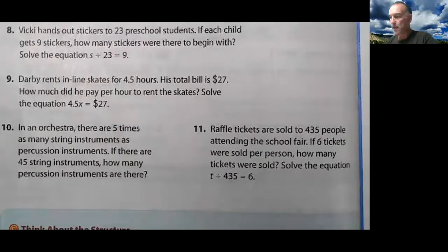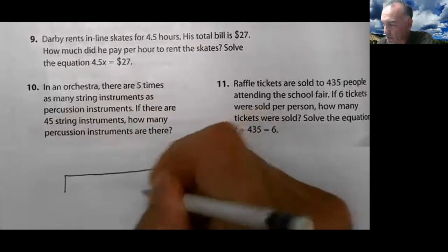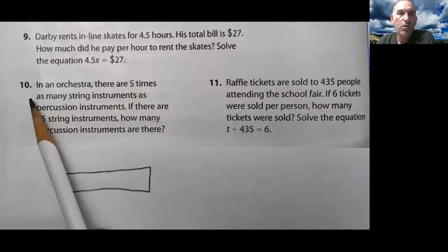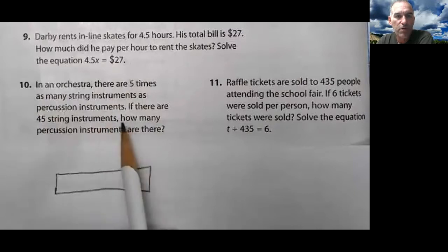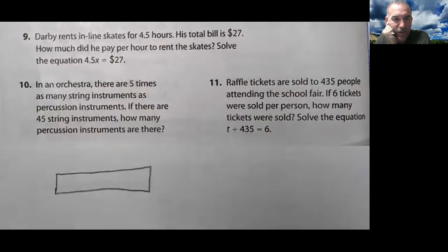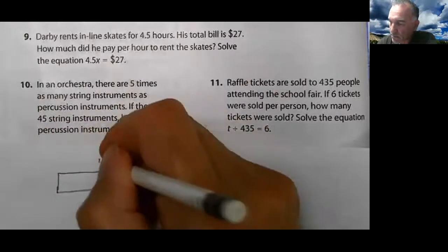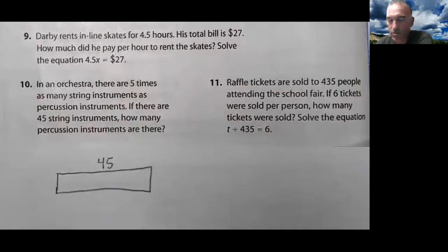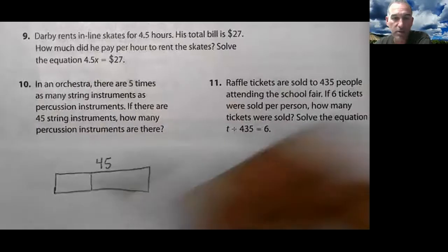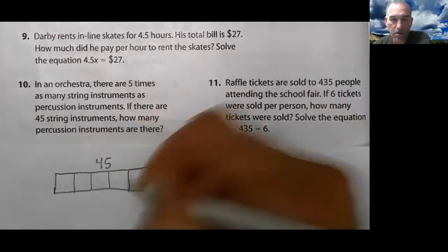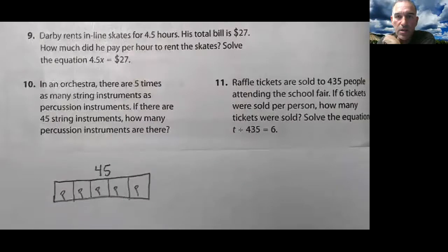Let's go on. Let's do number 10. I draw a unit bar. It says, in an orchestra, there are 5 times as many string instruments as percussion instruments. If there are 45 string instruments, how many percussion instruments are there? 5 times as many string instruments and it tells me there's 45 of them. So I'm going to come over here right in the center, right in the center. And I'm going to move a little bit to the left so it's off-centered. There's 2. There are 5. How many percussion instruments are there? Does that look like your picture?